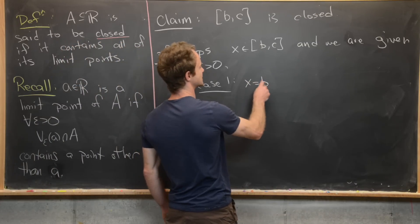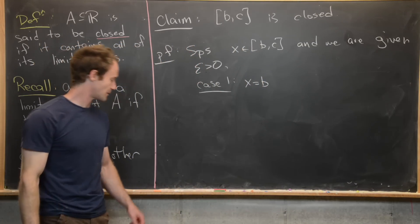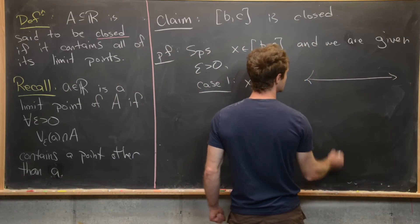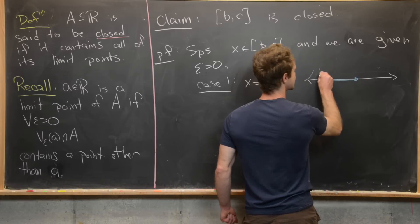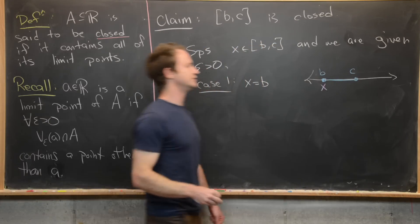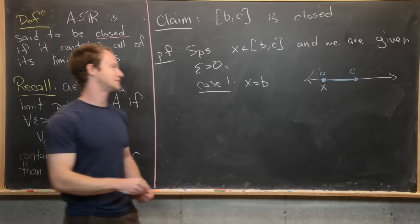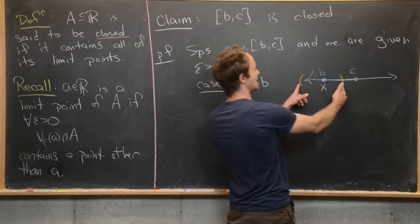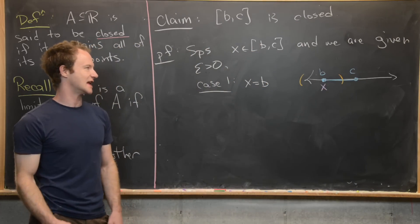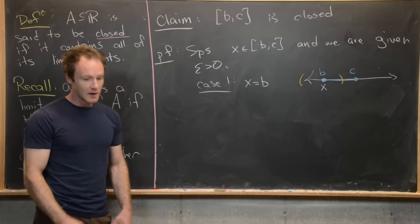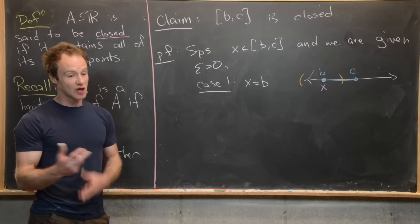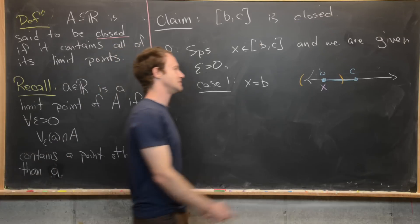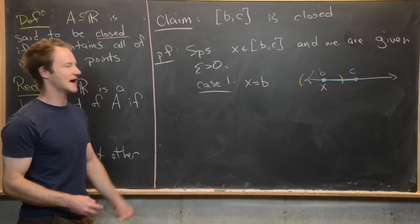The first case is when X equals B — the left-hand endpoint of this closed interval. Before jumping into the proof, let's sketch what's going on. We have the closed interval from B to C, X is set equal to B, and we're given some arbitrary epsilon greater than zero. We want to ensure the intersection between this epsilon neighborhood and the original interval is non-empty and contains an element other than B. Since epsilon can be anything, I'll break this into sub-cases.